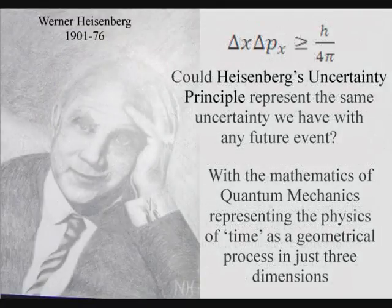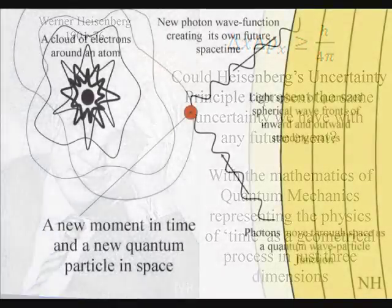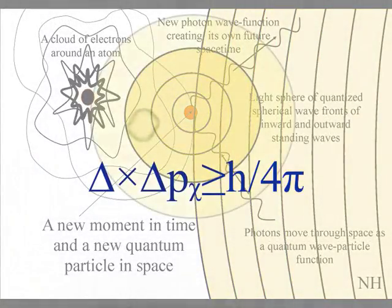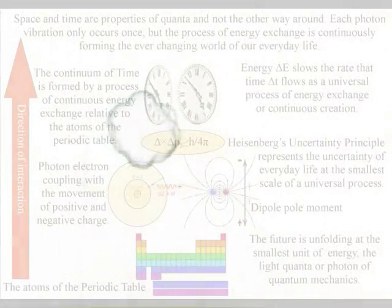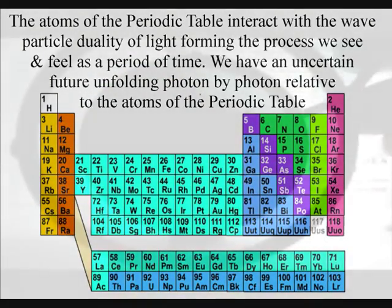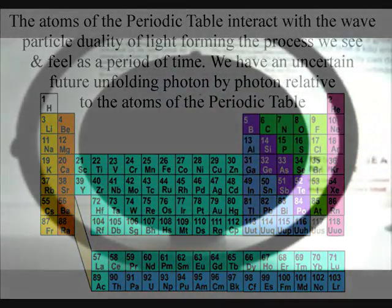Within such a process, Heisenberg's uncertainty principle represents the same uncertainty we have with any future event, at the smallest scale of the process. With each photon oscillation only occurring once, forming a probabilistic future relative to the atoms of the periodic table. And this is exactly what we are seeing unfolding in this experiment.